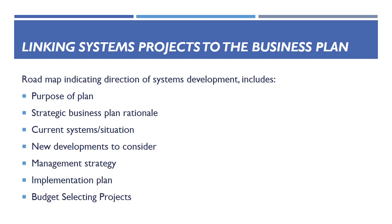Linking Systems Projects to the Business Plan: Organizations must create information system plans that support their entire business plan and incorporate strategic systems into top-level planning in order to identify the information system projects that will provide the greatest commercial value. The plan acts as a roadmap for system development, detailing the reasoning, the state of systems, the situation at hand, any new developments to be taken into consideration, the management strategy, the implementation plan, and the budget.